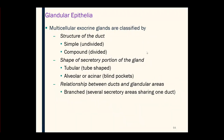So we classify the gland based on the structure of the duct. Then we look at the shape of the actual portion of the gland that produces the secretion — we call this the secretory portion. If the secretory portion is longer and slender, we call it tubular. If it's round, we call it alveolar, or you could say acinar — those terms are used interchangeably, and you should know both.